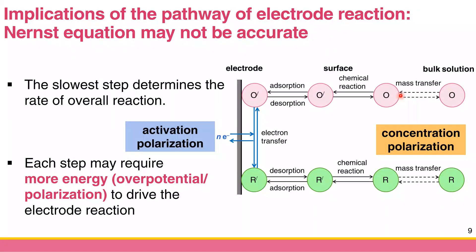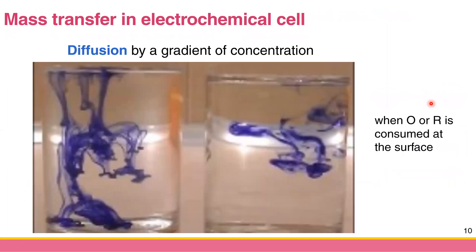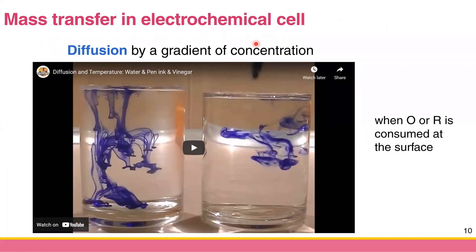In electrochemical cells, reactions have to occur at the electrode surface, so it is useful to talk about the modes of mass transfer. There are three modes of mass transfer in electrochemical cells.